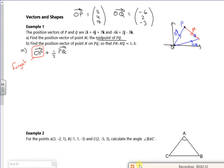So OP we know is (2, 4, 7). And it's a half of PQ. So if you remember, for PQ, PQ is the second letter minus the first letter. So Q, OQ is (-6, 2, -3), we need a bracket on that, minus OP, which is (2, 4, 7). There.